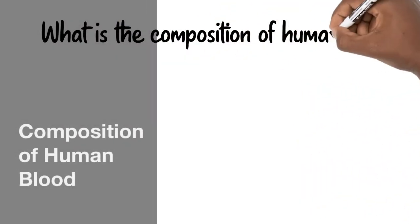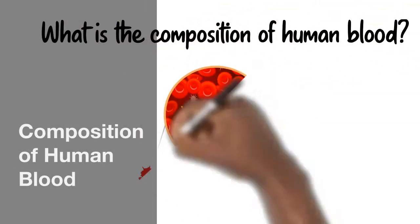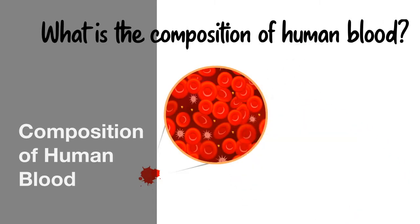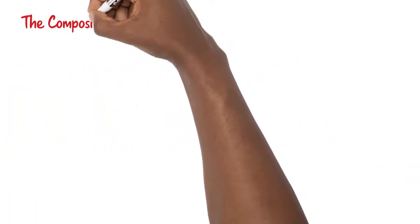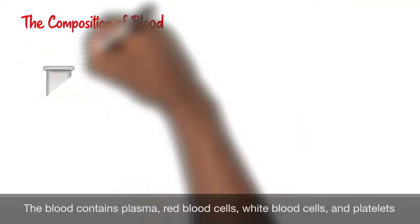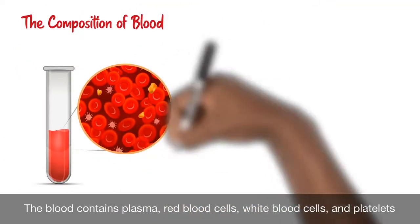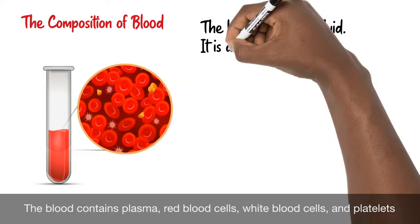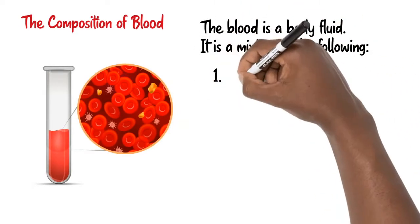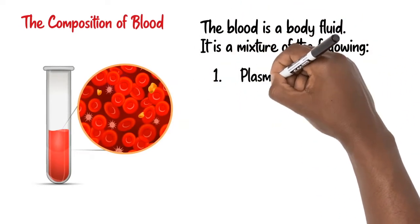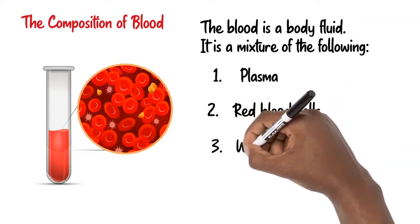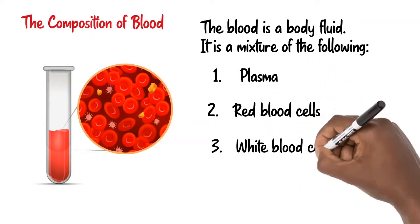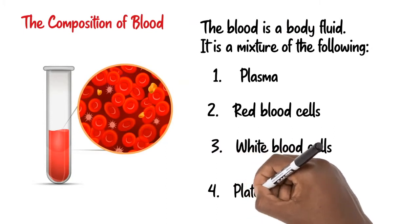What is the composition of human blood? The blood is a body fluid. It is a mixture of the following components: 1. Plasma, 2. Red blood cells, 3. White blood cells, and 4. Platelets.